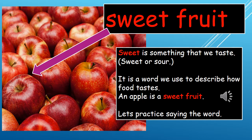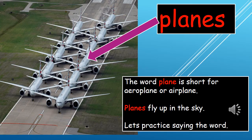Next we have sweet fruit. Fruit is something that we can taste — for example, sweet or sour. I'm sure you know these words already. It is a word that we use to describe how food tastes. For example, an apple is a sweet fruit. Practice saying them together: sweet fruit. We use the word sweet as an adjective and it helps to explain what we are tasting.